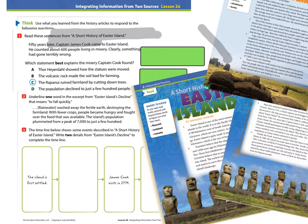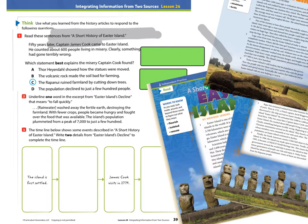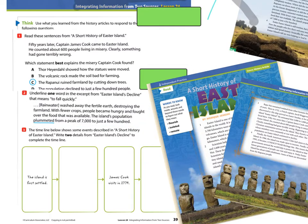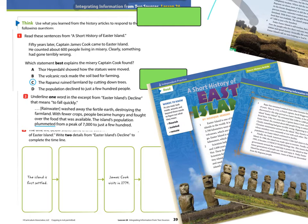Number two asks us to underline one word in the excerpt from 'Easter Island's Decline' that means 'to fall quickly.' The excerpt reads: 'Rainwater washed away the fertile earth, destroying the farmland. With fewer crops, people became hungry and fought over the food that was available. The island's population plummeted from a peak of 7,000 to just a few hundred.' We discussed this word during modeling — the answer is 'plummeted.' Good job.